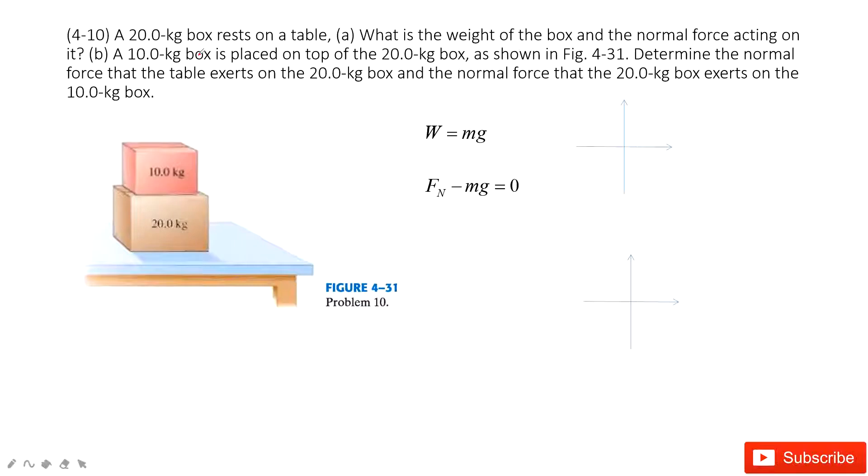It tells you there is just one box, 20 kg, and asks for the weight of the box and the normal force acting on it. So first, the weight is the mass times the acceleration due to gravity g.